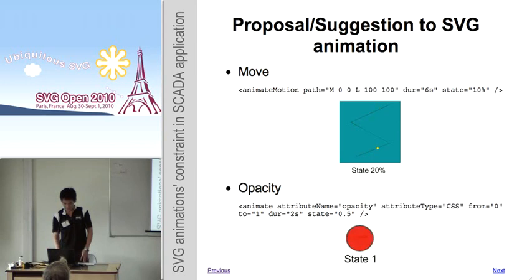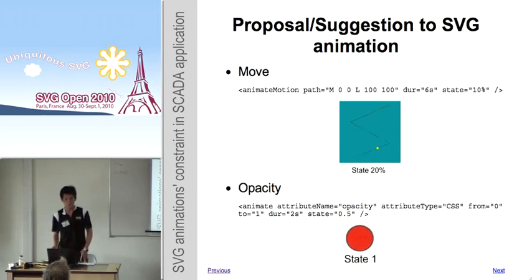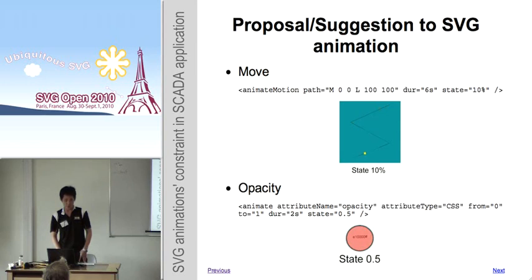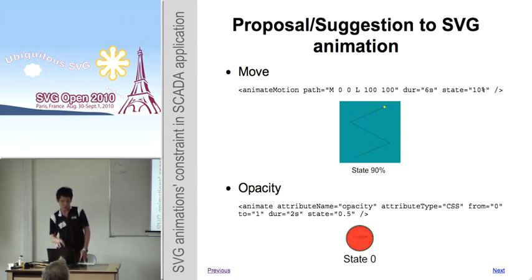Opacity animation is generally similar to the current SVG version. The from and to attributes represent the minimum and maximum opacity, and the state takes a number between them. In this example, when the state is 1, it will take 2 seconds to change from an opacity of 0.5 to 1.